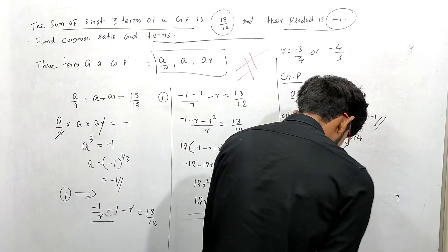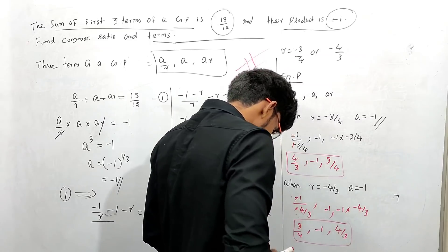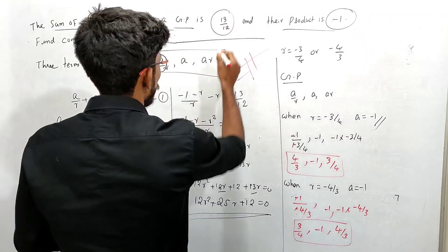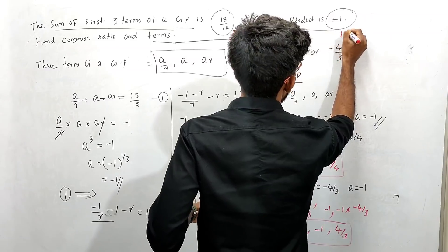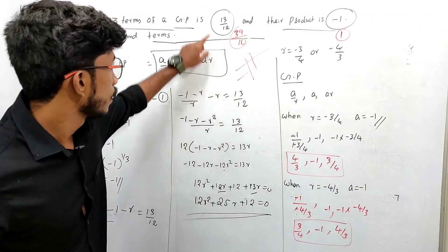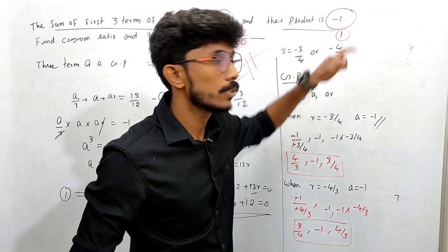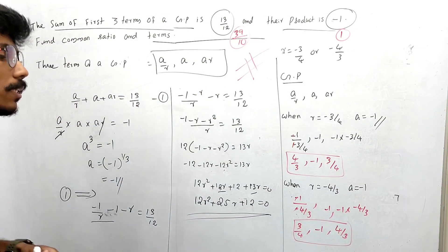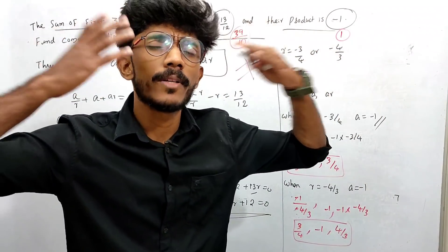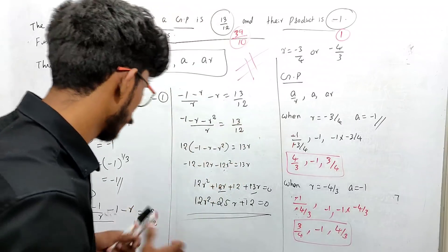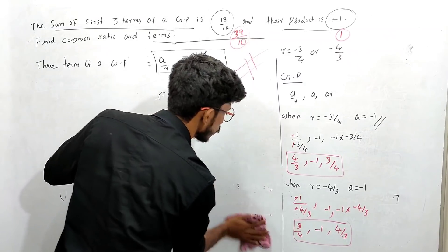If you want to ask this question in the exam, just ask this question. The sum given is 13 by 12. This is the same question. Let's go to the next problem — find the sum of 7 plus 77 plus 777 plus... This is a 100% exam question.